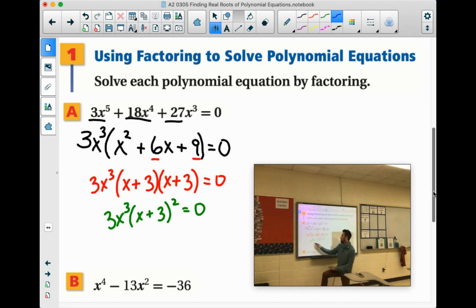We have the 3x to the 3rd on the outside. And then we're ready for our answers. So this 3x to the 3rd out here, x could equal 0. And then this x plus 3 to the 2nd power, x could equal negative 3. So we solved them both by factoring.